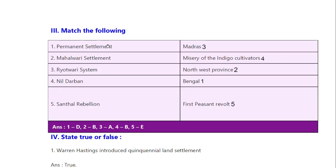Match the following. Permanent Settlement — Bengal. Mahalwari Settlement — North-West Province. Ryotwari System — Madras. Neel Darpan is the name of the play about the misery of Indigo Cultivators. Santal Rebellion was the first peasant revolt.